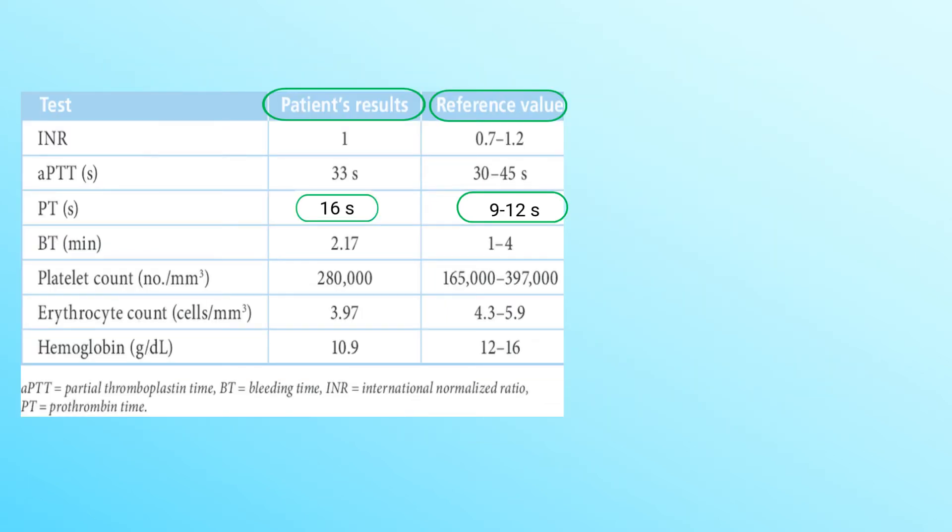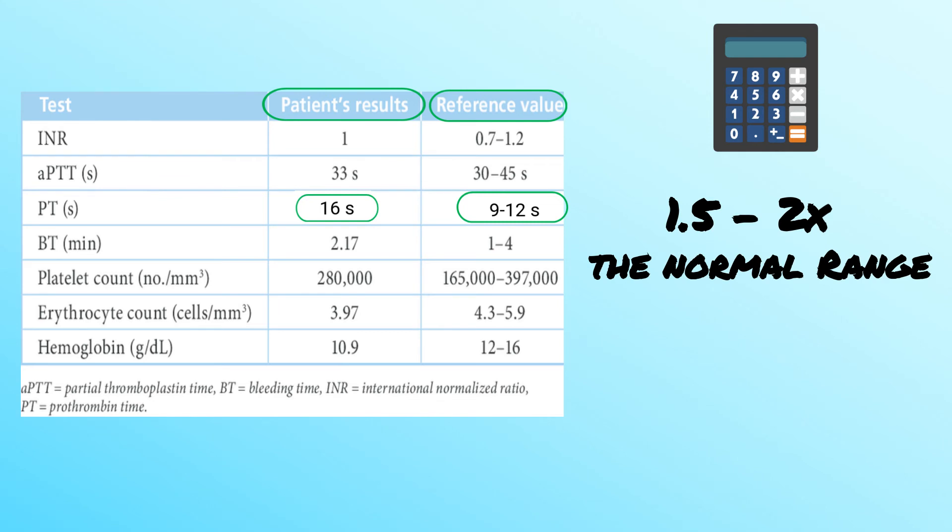It's important that you know how to calculate this. The only thing you need to remember is that the therapeutic range for a patient on anticoagulation therapy is 1.5 to 2 times the therapeutic range indicated on the lab report.